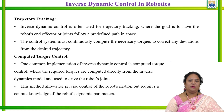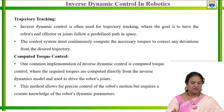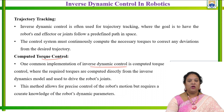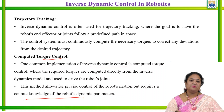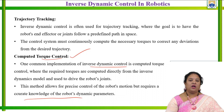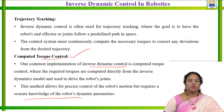This is a continuous computational process where the necessary torque to correct any deviation from the desired trajectory is very important. One common implementation of inverse dynamic control is computed torque control, where the required torques are computed directly from the inverse dynamics of the required robot joint, and when we need to achieve precise control of the robot motion, it requires accurate knowledge of the robot dynamics. In order to achieve accurate knowledge of the robot dynamic parameters, the computed torque control plays a vital role in the inverse dynamic control system.